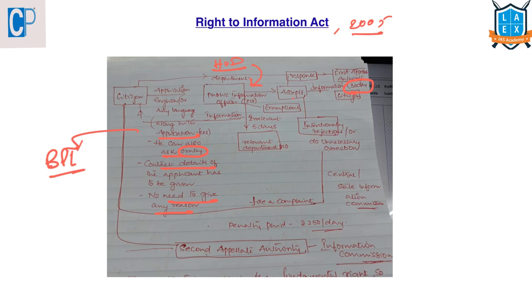If a citizen has mistakenly approached an irrelevant department, the PIO is responsible for forwarding the application to the relevant department within five days and conveying this to the citizen. However, under Section 8 of the RTI Act, there are certain exempted areas where information cannot be disclosed, and the PIO can inform the citizen accordingly.